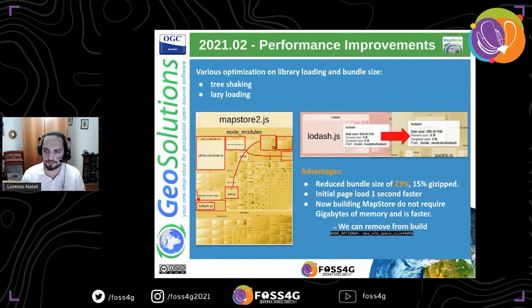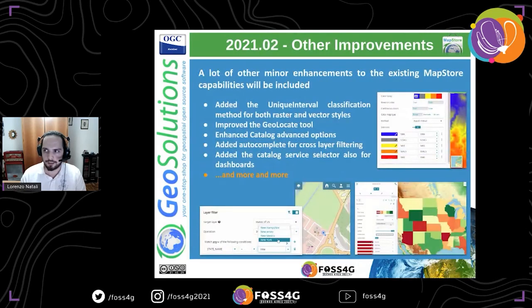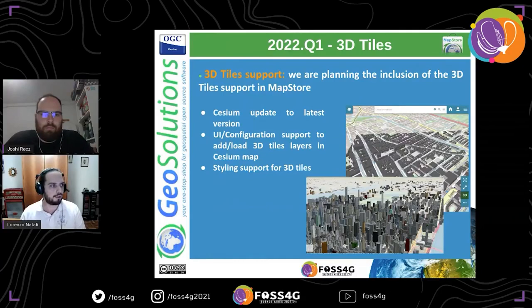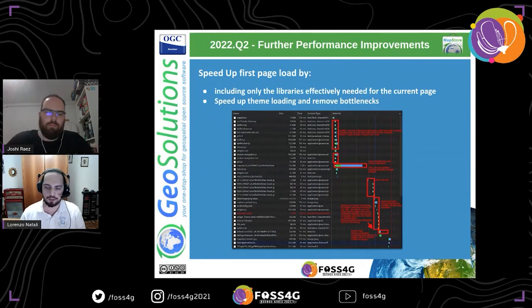We also did a lot of optimization in libraries, reducing the bundle size, initial page load, and memory requirements for building. There are many other improvements we don't have time to discuss. For future releases next year, we plan to create a new project system with a single entry point to create projects and extensions using the same command-line tool, with a reduced boilerplate that makes maintenance easier. We also want to support 3D tiles and improve performance.